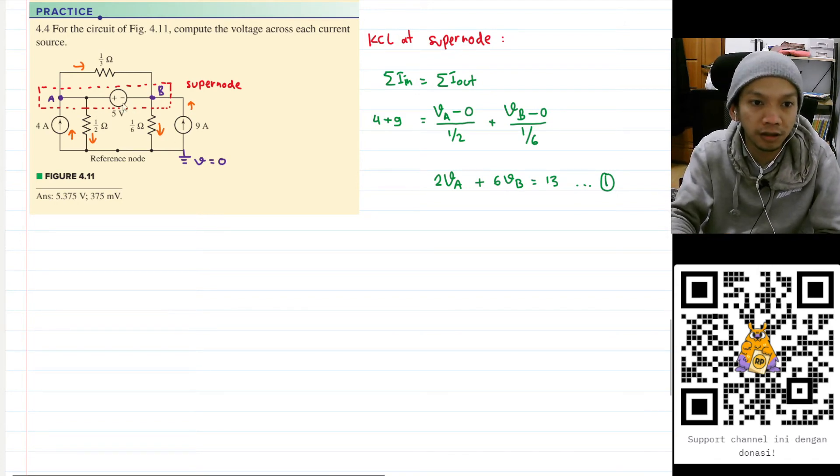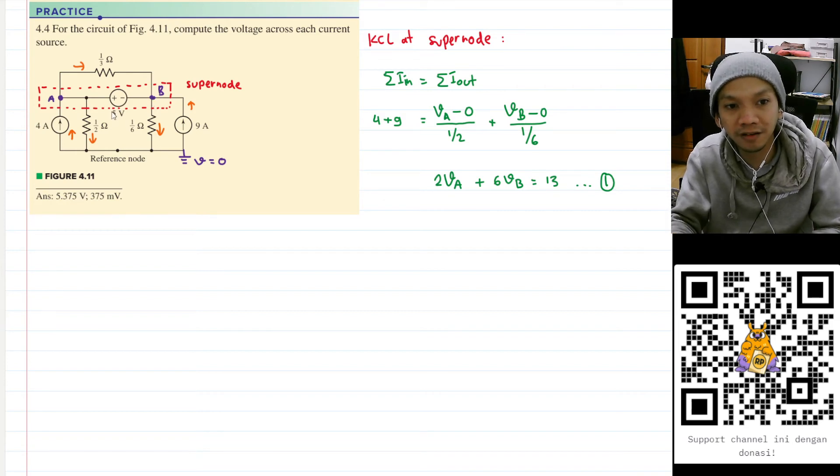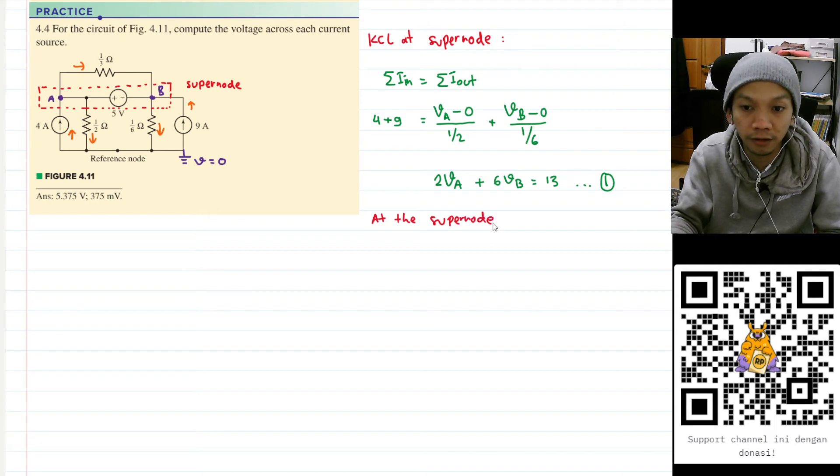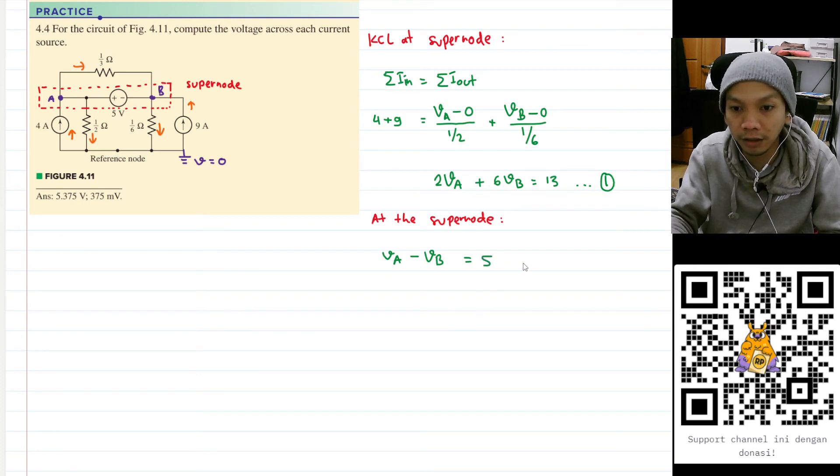So what can we do here? Let's take a look at the super node. So we have node A and node B, and between them there is exactly a five volt voltage source. So at the super node we will have the difference between those nodes, so I will have VA minus VB that will equal to the value of the voltage source, so I'll have five. And this will act as equation number two.